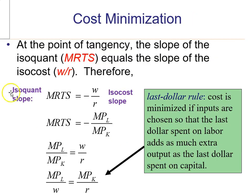The last dollar rule says to equate these two slopes: the MRTS slope of the isoquant with negative W over R, the slope of the isocost. These two slopes are equal, and the MRTS slope is this ratio of marginal productivities. Equating these two and rearranging — dividing both sides by W and multiplying both sides by MPK — you are left with the last dollar rule expression: MPL over W equals MPK over R.